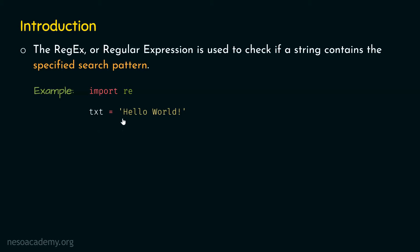Let's say we want to search for a specific pattern in this string — whether this string starts with hello or not. For this purpose, we need one function from the RE module which is called the search function. We need the search function to search for a specific pattern in the string, and we can take that function from the RE module. A module is simply a collection of functions. We can use the search function available in this module called RE, and with the help of the dot operator, we can access that function.